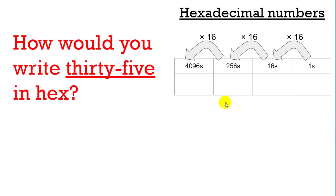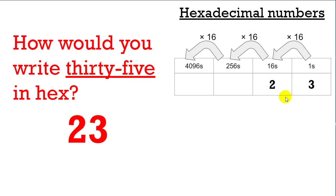How would you write thirty-five in hexadecimal? Well, to get to thirty-five you need two sixteens and three ones. Two sixteens is thirty-two, and thirty-two plus three is thirty-five. So you write it as two-three in hex — thirty-five. I'm writing in hexadecimal numbers.